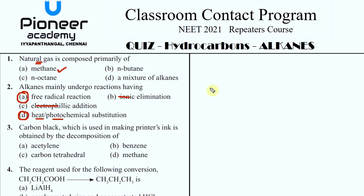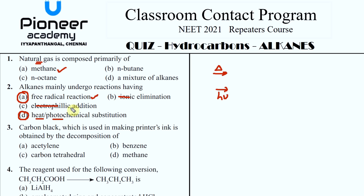Alkanes undergo free radical reactions based on heat or photochemical conditions. Either they give you heat or they give you hν. Both of them are possible. This is the more correct answer because there are other types of photochemical reactions that alkanes do not undergo.